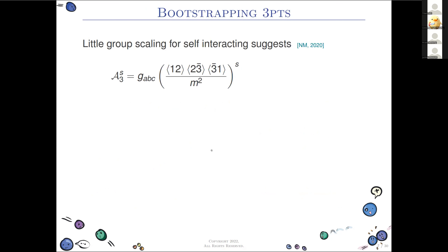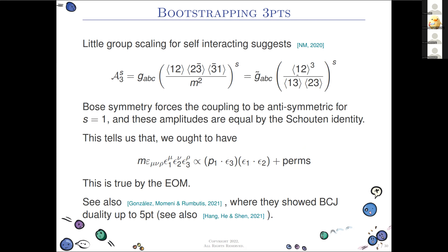We can use little group scaling because an angle spinor without a bar is negative helicity and with a bar is positive helicity, carrying little group weight of plus or minus one-half. The amplitude transforms in the usual way under little group scaling. Therefore, any self-interacting three-particle amplitude can be written in a specific form with the correct little group scaling.